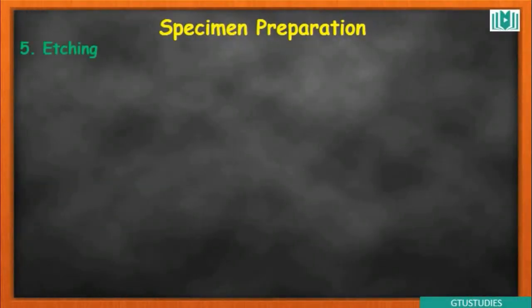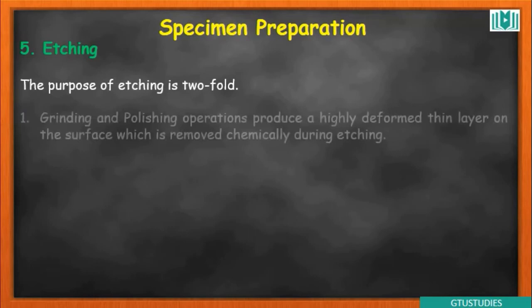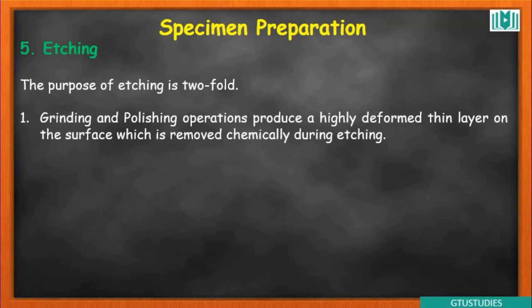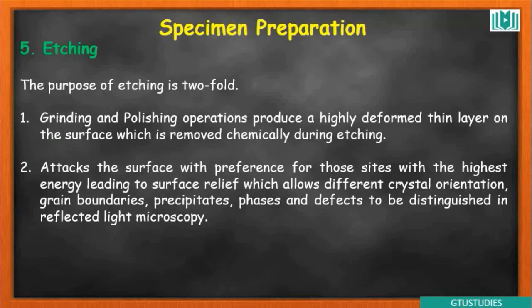The last and fifth step is etching. The main purpose of etching is twofold. First, it removes the highly deformed thin layer produced during grinding and polishing through a chemical process. Second, the chemical process attacks the surface at sites with the highest energy, leading to surface relief which allows different crystal orientations, grain boundaries, precipitates, phases, and defects to be distinguished in reflected light microscopy.